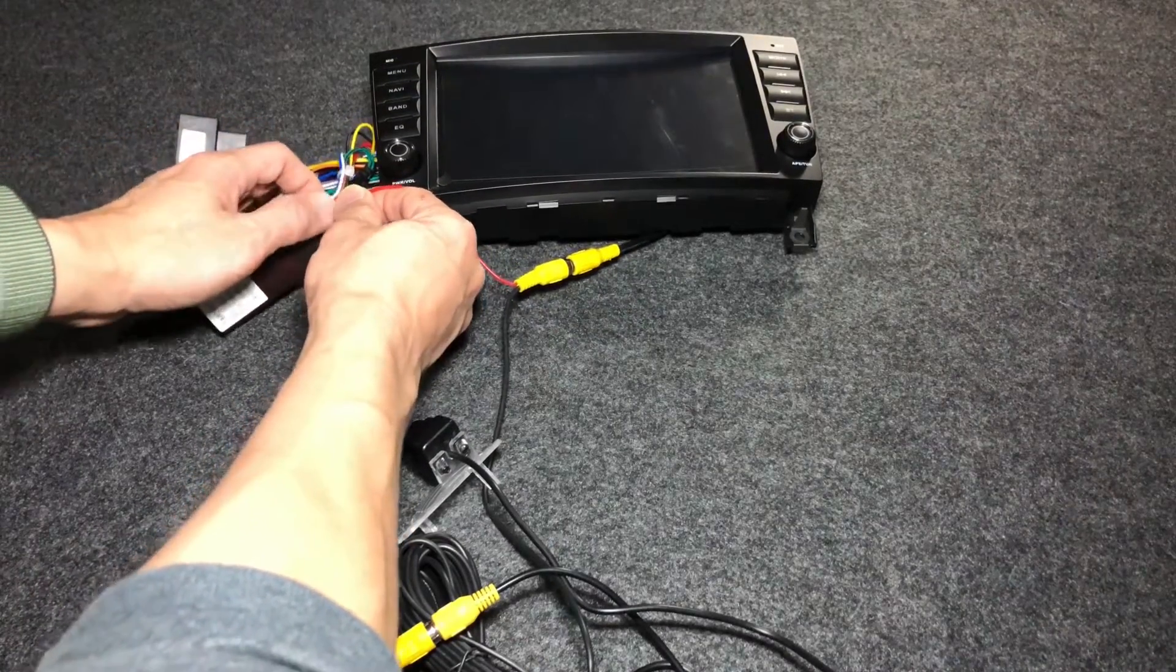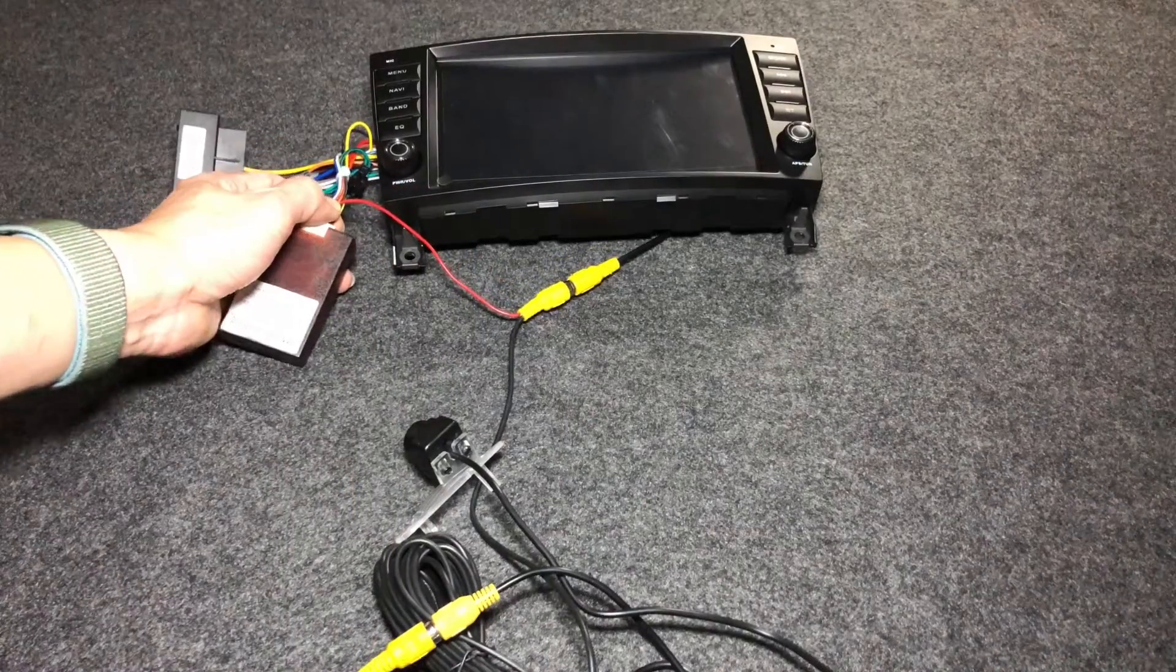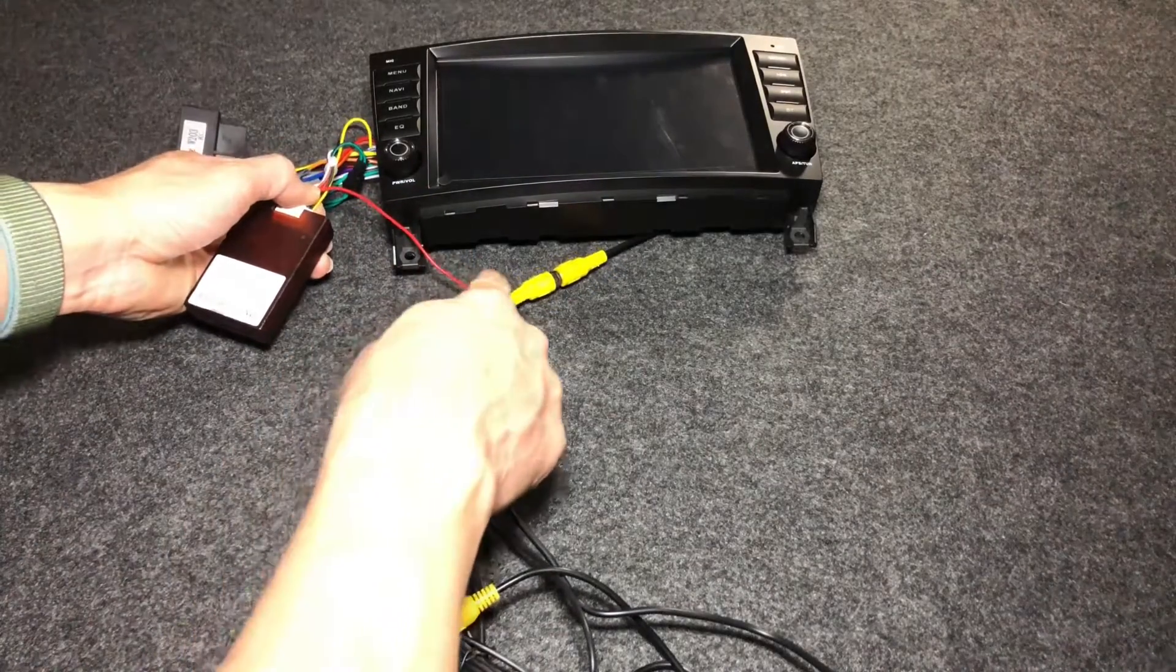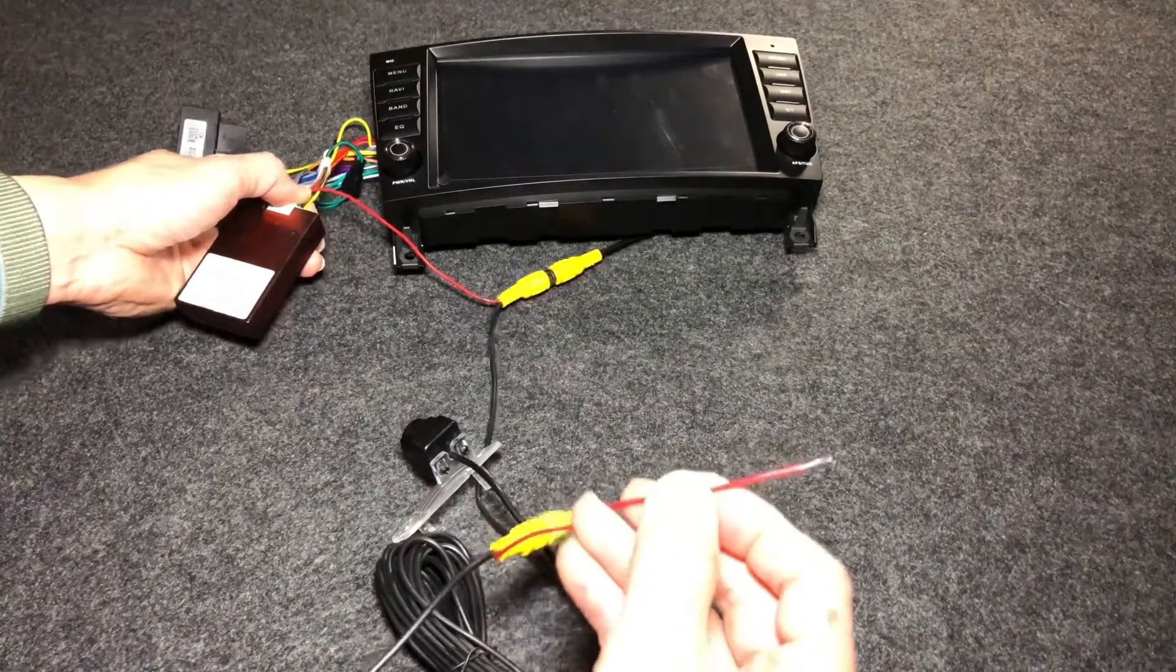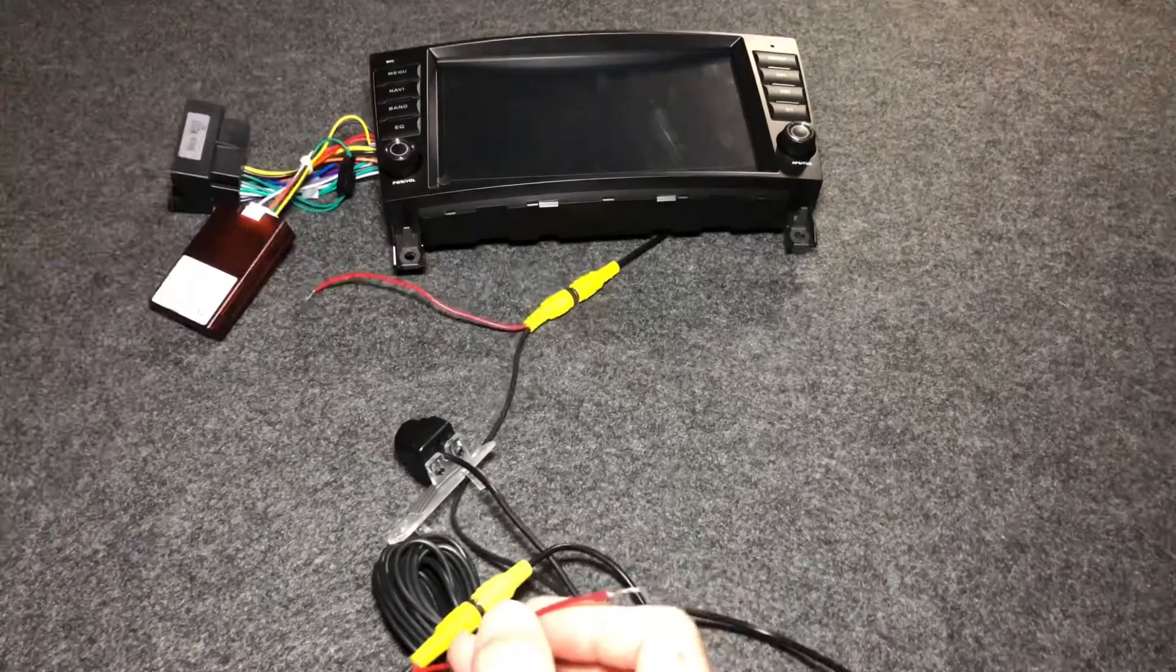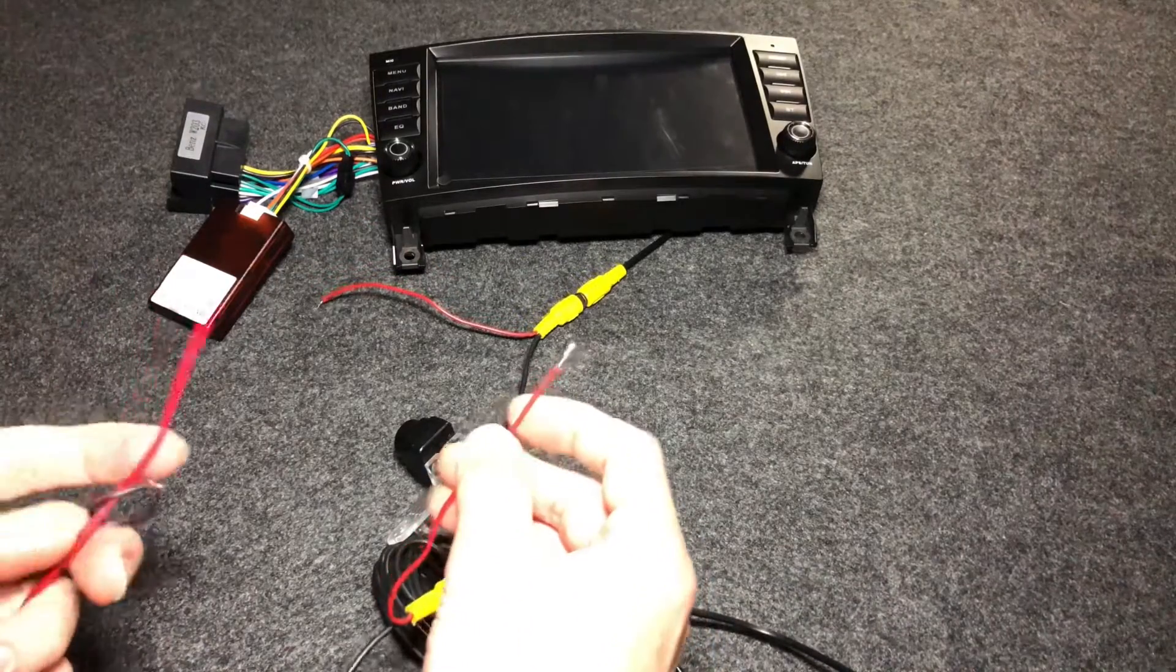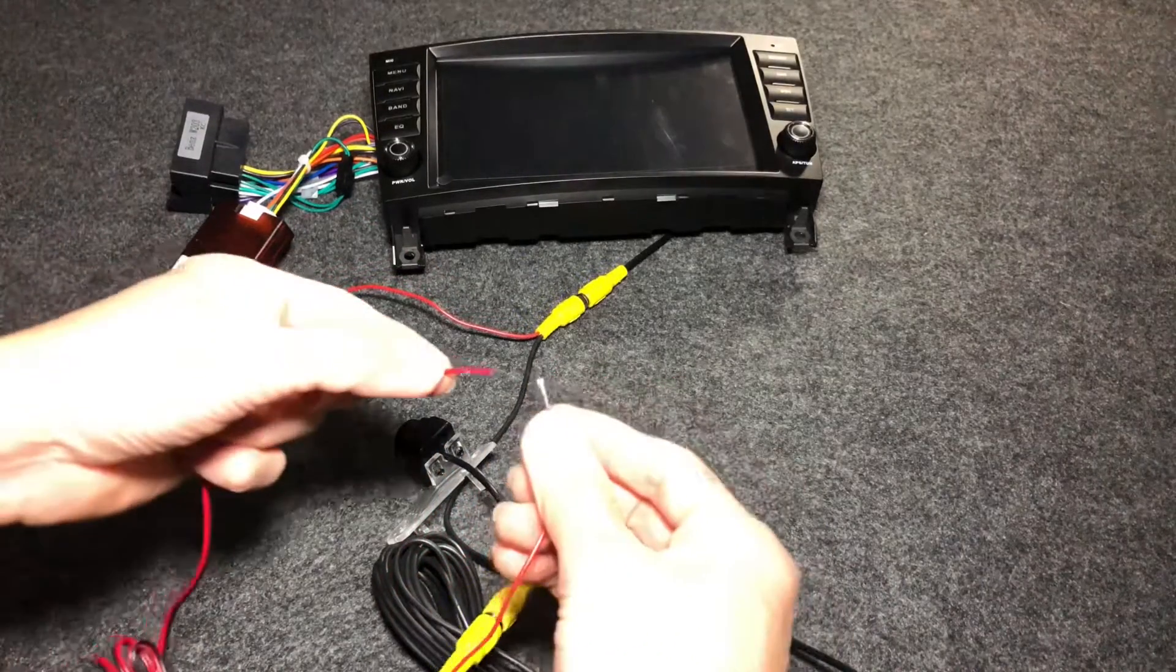That red wire I'll then connect to the brown wire, and that's where the 12 volt signal will come from when I switch reverse. Now that red wire is actually connected to this red wire, so all I need to do now is connect this other end of the red wire into the red wire that feeds into this camera.